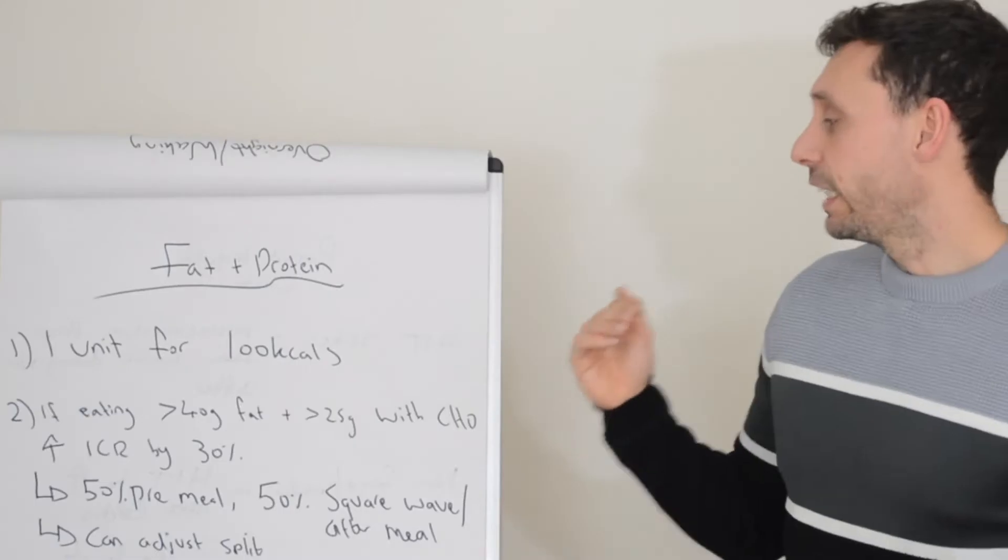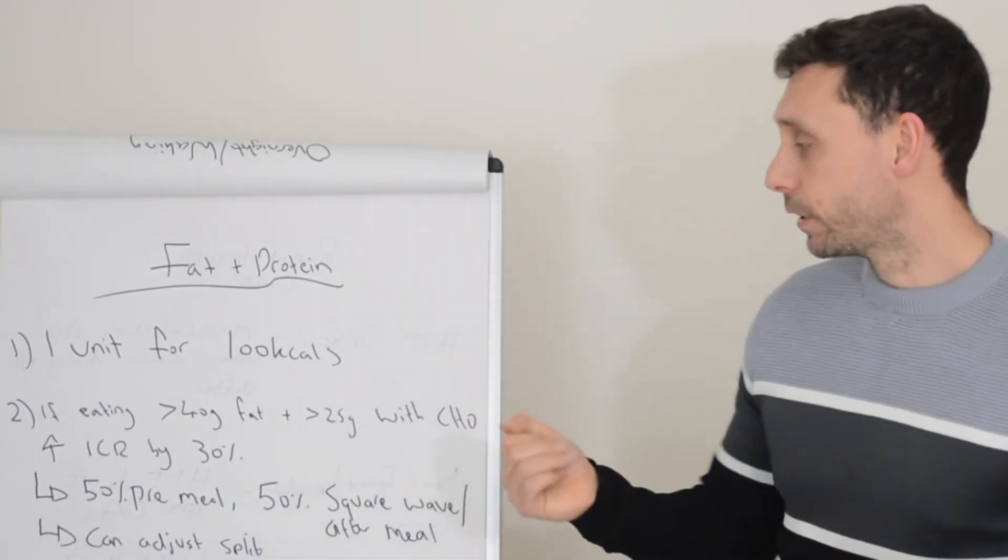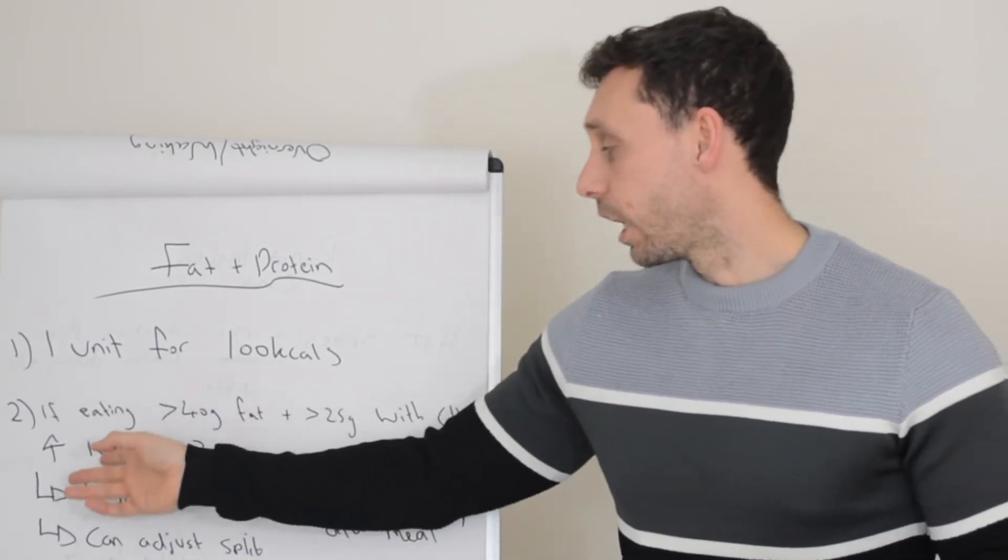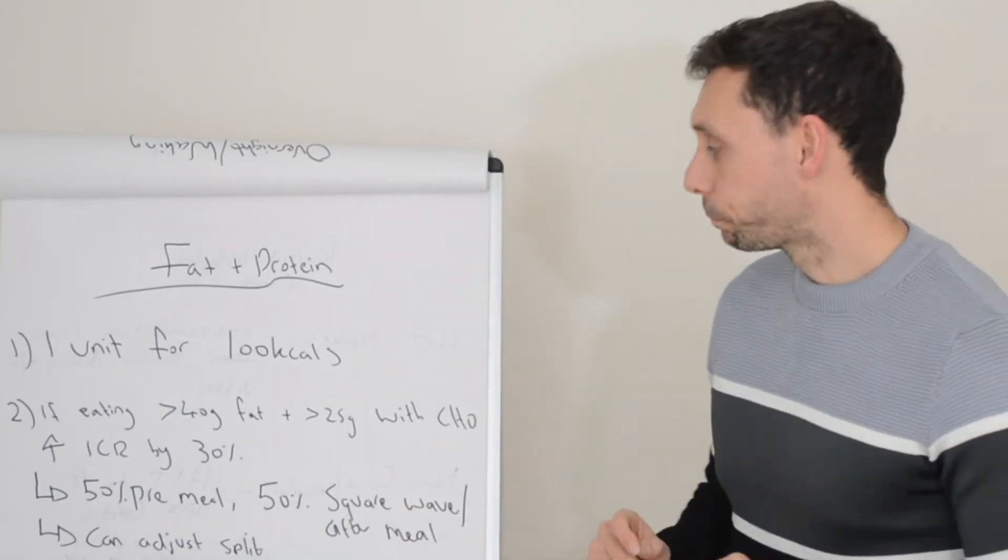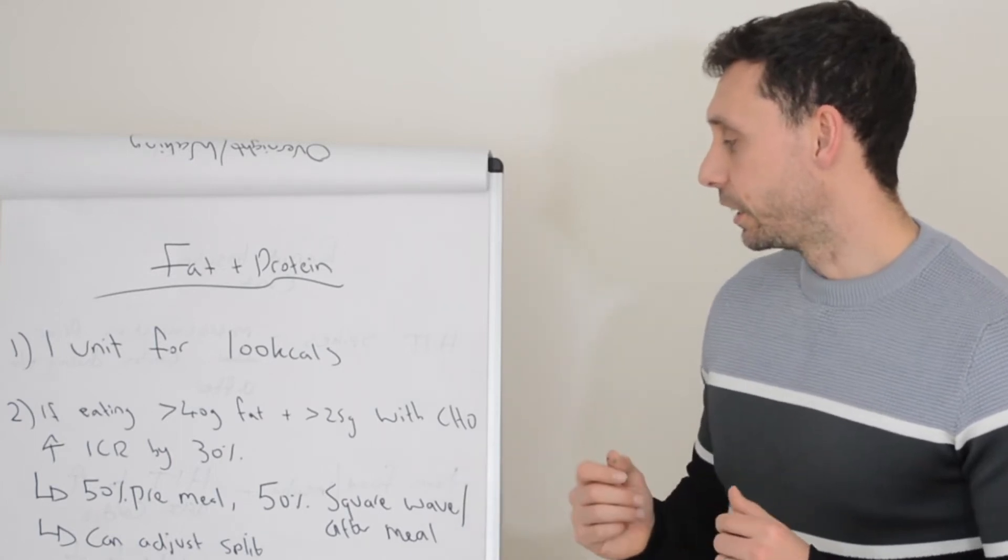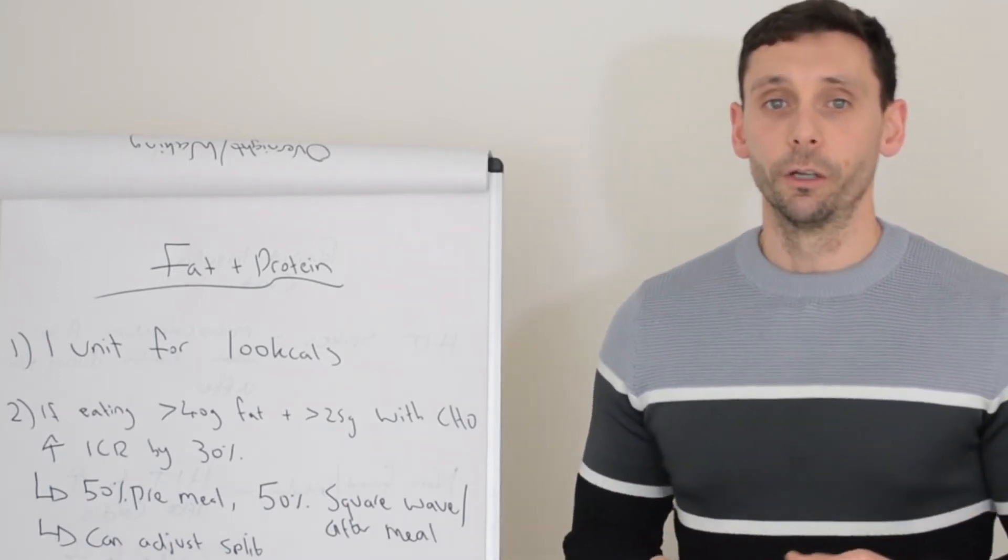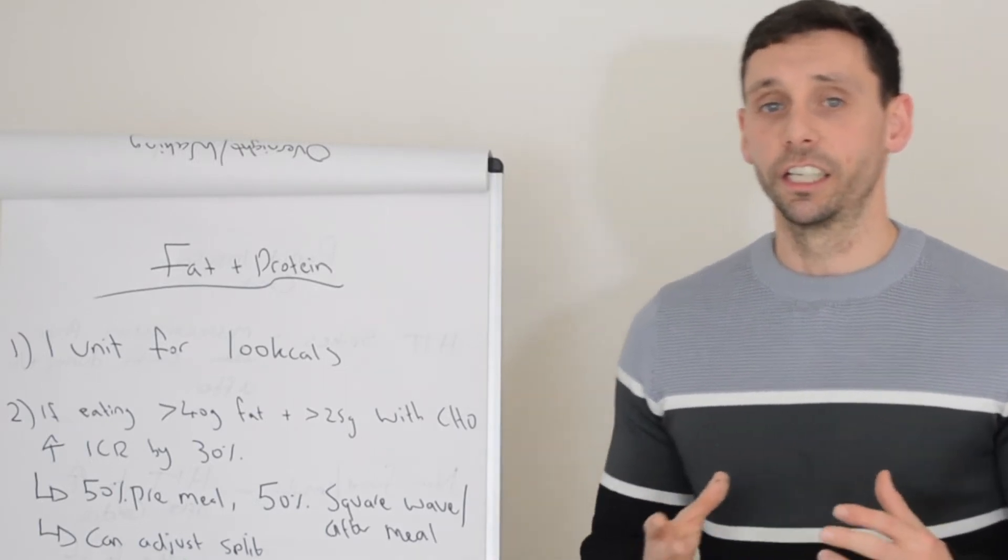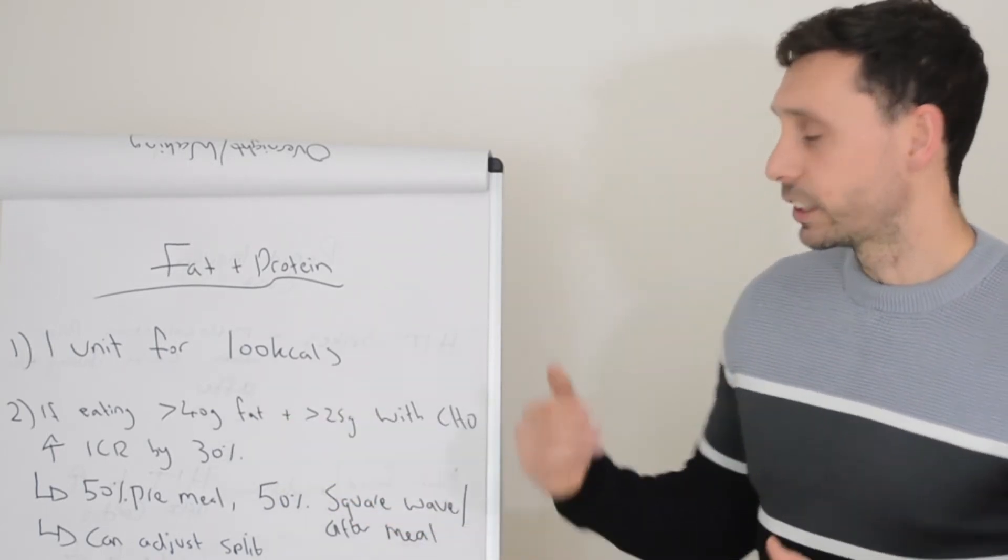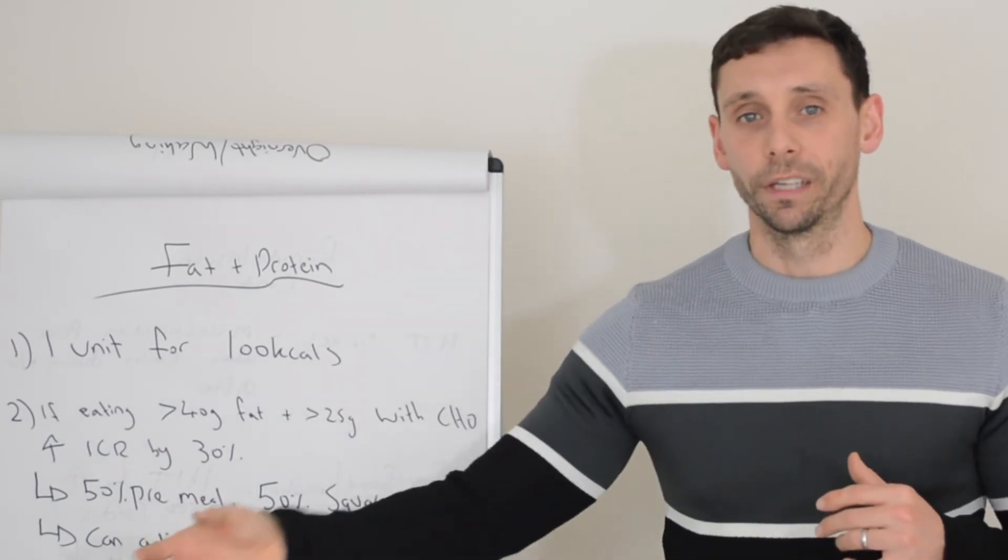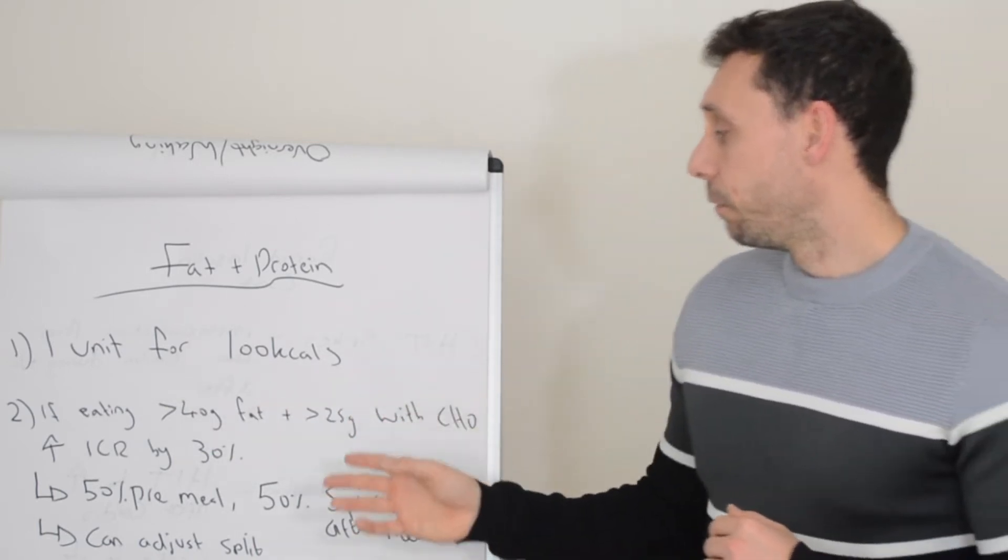Method two is if you are eating at least 40 grams of fat or over 25 grams of protein with carbohydrate, then you may need to increase your carbohydrate ratio dose by 30%. So let's say you were taking three units for your meal. So 10% of that is going to be 0.3. So 0.3, 0.6, 0.9. So essentially in that example we can round that to one unit. So if you were taking three units, the 30% increase would be an additional one unit on top of that. Technically it's 0.9 but we can round it to one to help compensate for the additional fat and protein. Now that is with carbohydrates.